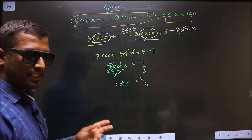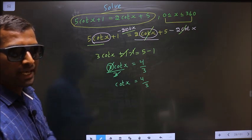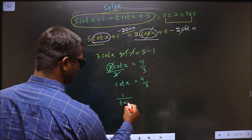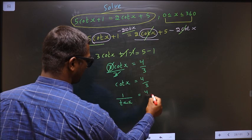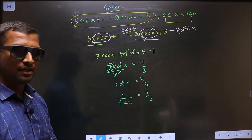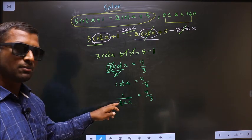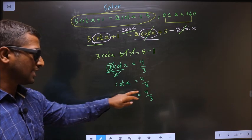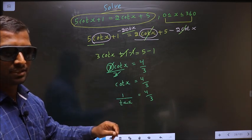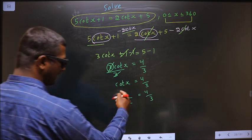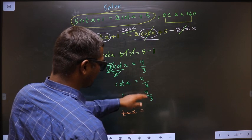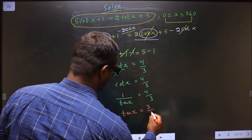Now change cot to tan. So cot x is nothing but 1 by tan x equal to 4 by 3. Now tan x should be the subject. For that to happen, we should do reciprocal on both sides. So when we do the reciprocal, we get tan x equal to 3 by 4.